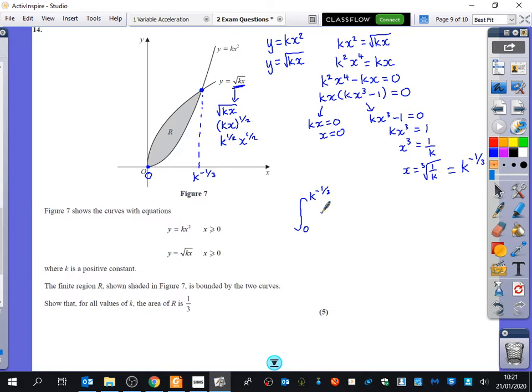So, I'm going to integrate the top curve, which is k to the half, x to the half, minus the bottom curve, which is kx squared. And I'm going to be integrating that with respect to x. Now, your brains won't like seeing just k and x. You just need to fight against that. Your brain thinks that k is a variable. It's not. It's just a number. So, you have to keep telling yourself, what would it be if just k was a number.